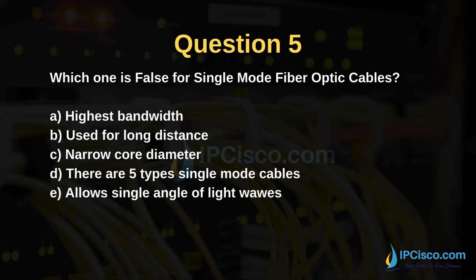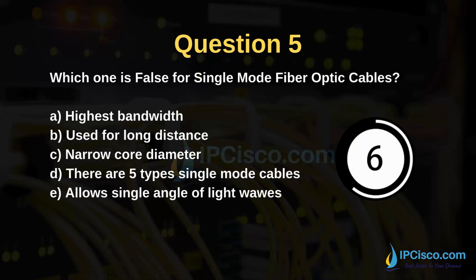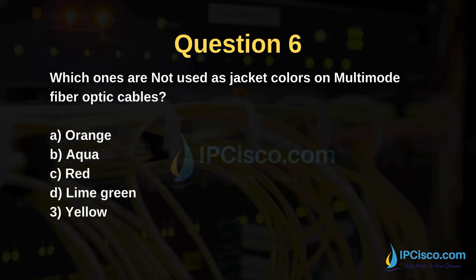Which one is false for single-mode fiber optic cables? Options: highest bandwidth, used for long distance, narrow core diameter, there are five types of single-mode cables, allow single angle of light waves. The answer is D — there are only two types of single-mode fiber optic cable: OS1 and OS2.